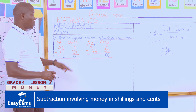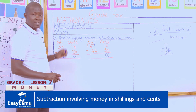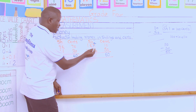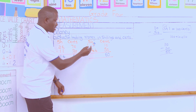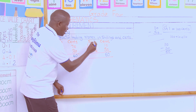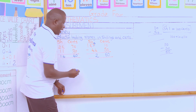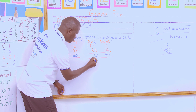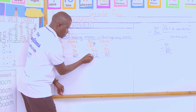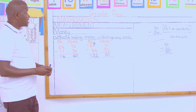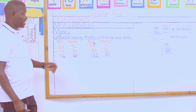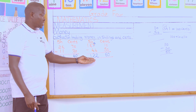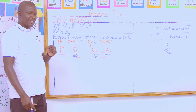We come back to the shilling side. Now 166 take away 44 shillings: six take away four gives two, six take away four gives two, and one take away zero we remain with one. So 167 shillings and 10 cents take away 44 shillings and 50 cents — our answer becomes 122 shillings and 60 cents.